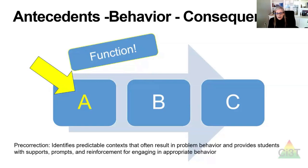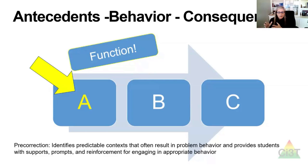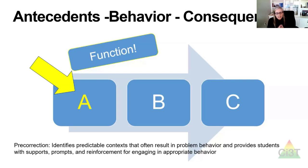What we know about de-escalation strategies is that if we can get in front of the behavior, we're most likely to have a successful impact. When we think about the three-term contingency of behavior: the B is the behavior, the C is the consequence — anything that occurs after that behavior, whether it's behavior-specific praise or separation from a group. Really where we want to focus our efforts is on the A — the antecedents — the things we can do preventatively to set kids up for success.